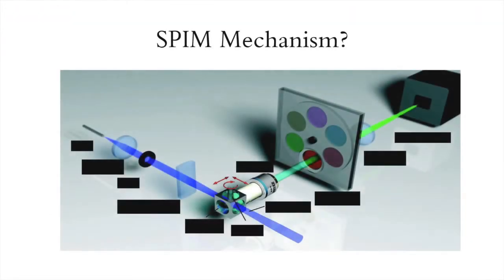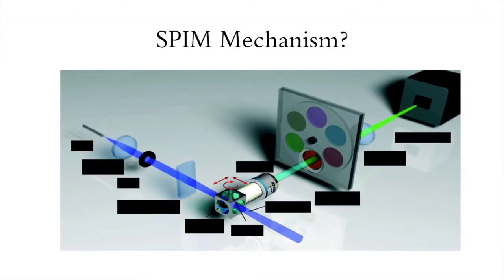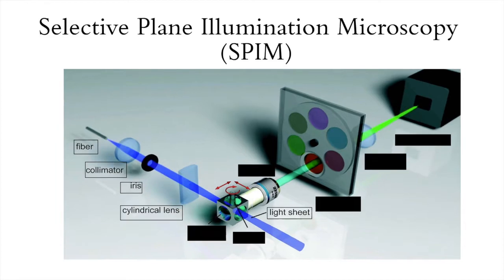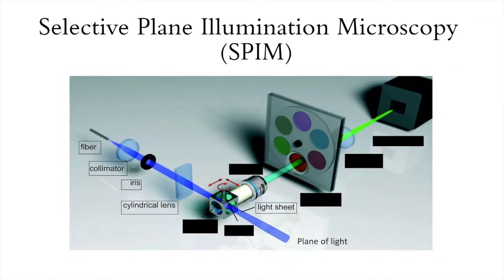Selective plane illumination microscopy (SPIM) is a microscopy technique that creates optically sectioned images of a specimen by illuminating a section of a gene or protein with a sheet of laser light. Cylindrical optics are used to focus these beams of light onto one direction, therefore creating a plane of light.